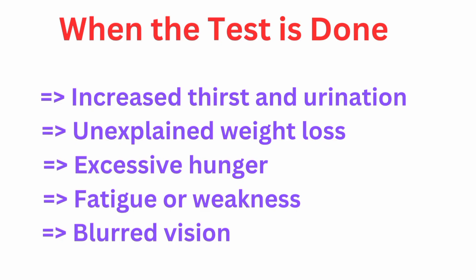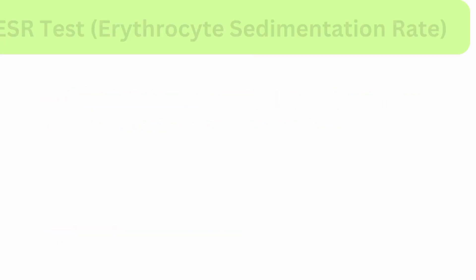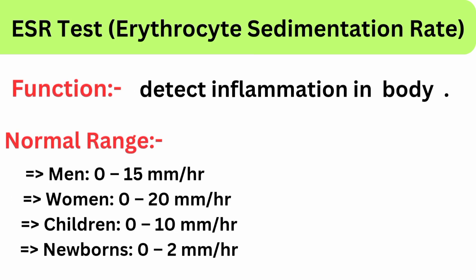Erythrocyte sedimentation rate (ESR) test: its function is to detect inflammation in the body. Normal range: men is 0 to 15 mm per hour, women is 0 to 20 mm per hour, children is 0 to 10 mm per hour, and newborns is 0 to 2 mm per hour.